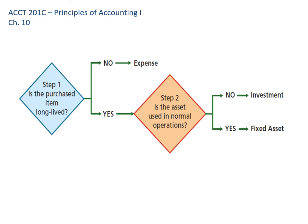Let's talk about whether or not we capitalize an asset — meaning put it on our balance sheet — or if we just expense it. The key thing is how long it's going to last. If it's going to last a long time, we capitalize it: we put it on our balance sheet and increase the asset account. If it's not long-lived, we expense it. For example, saw blades for a machine, drill bits — those wear out fairly quickly, so we'd just expense those things.